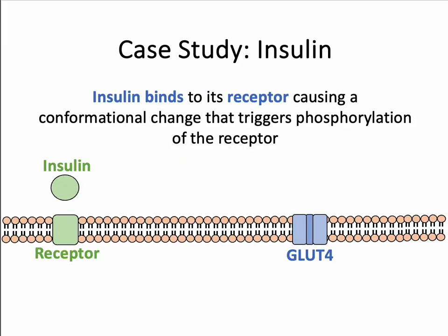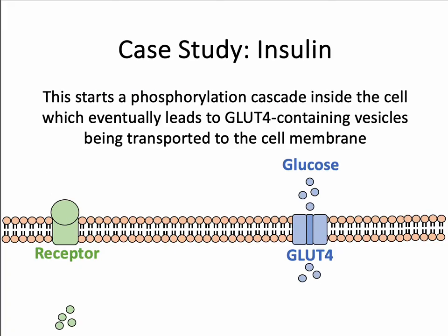To show this through the diagram: insulin binds to its receptor, the receptor undergoes a conformational change, and that conformational change triggers phosphorylation of the receptor. Once that phosphorylation takes place, there is a phosphorylation cascade in the intracellular space, which through these knock-on cascades leads to vesicles containing GLUT4 being transported to the cell membrane. So insulin docking with the receptor leads to phosphorylation due to the conformational change and activation, which ultimately triggers GLUT4-containing vesicles to transport glucose across the cell membrane of fat and muscle cells.